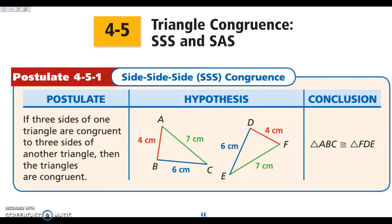Hey everybody. Today we are looking at section 4 of 5, which is still about triangle congruence, but what we're going to look at today is some shortcuts to show that triangles are congruent. In the last lesson, we talked about how in order to show triangles were congruent, we had to prove that every pair of corresponding sides was congruent and every pair of corresponding angles was congruent.